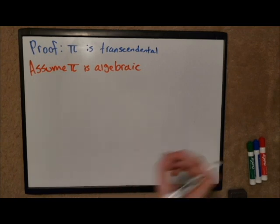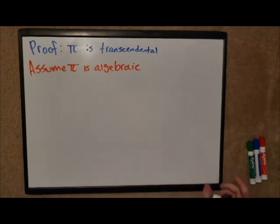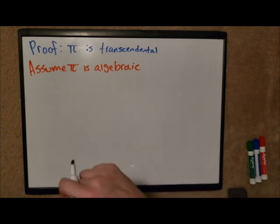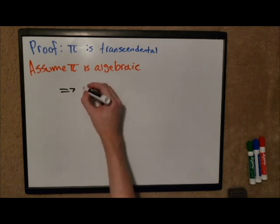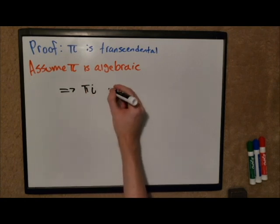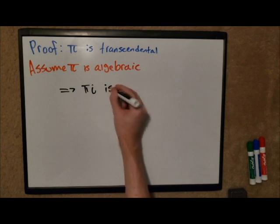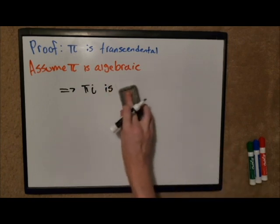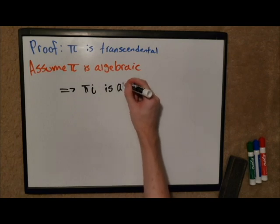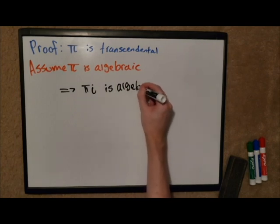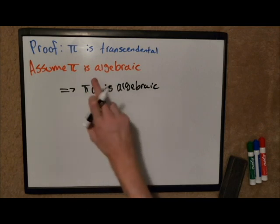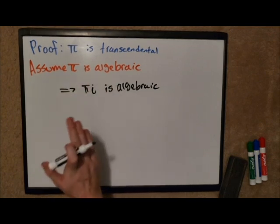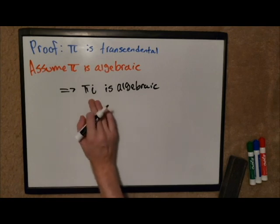We're assuming pi is algebraic, so based on our first two statements, first two facts that we just mentioned, this implies that if we take pi times i, then that should be an algebraic number. Because i is an algebraic number, pi in this context we are assuming it is algebraic, so therefore multiplying two algebraic numbers is also algebraic.